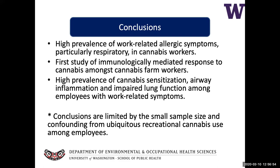Worker demographics vary regionally in Washington State. In the western part of the state around the Seattle-Puget Sound area, the workforce tends to be relatively young and predominantly Caucasian. In Eastern Washington, where a lot of the outdoor grows are located and where most outdoor agriculture takes place in the state, there is a very large Hispanic agricultural workforce. We observed that in some outdoor cannabis grows there was a higher proportion of Hispanic workers, and anecdotally a lower prevalence of cannabis use amongst those workers.